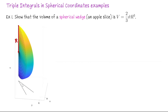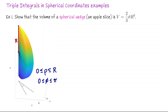We need to figure out bounds for the spherical radius rho, the angle down from the north pole phi, and how much we rotate through the x-y plane theta. For rho: looking inside this apple slice, we start at the origin and go all the way out to the peel of the apple. So rho goes from zero to the full radius R. For phi, we have the full slice from the north pole all the way down to the south pole, so phi is bounded between zero and pi.